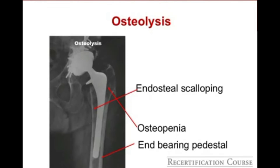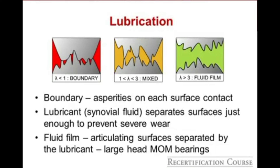Lubrication is important in total hip arthroplasty. Two major categories exist: boundary lubrication, where surface asperities contact directly, and fluid film lubrication, where articulating surfaces are separated by synovial fluid. In reality, most hips have a mixed lubrication pattern — some separation of surfaces, just enough to prevent severe wear, but asperities do come into contact. One proposed benefit of large-head metal-on-metal total hips was achieving fluid film lubrication to reduce wear.